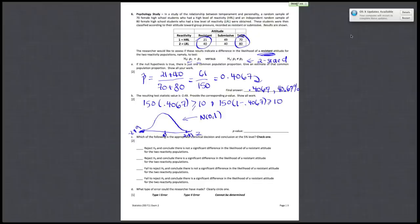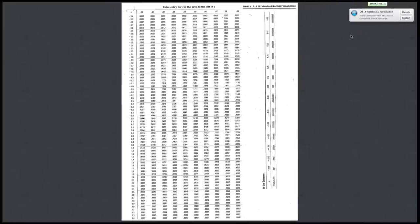So what you do is you go to your Z-table, and you can look up negative 2.49, so negative 2.4 and then 9. And you should get a P-value of 0.0064.